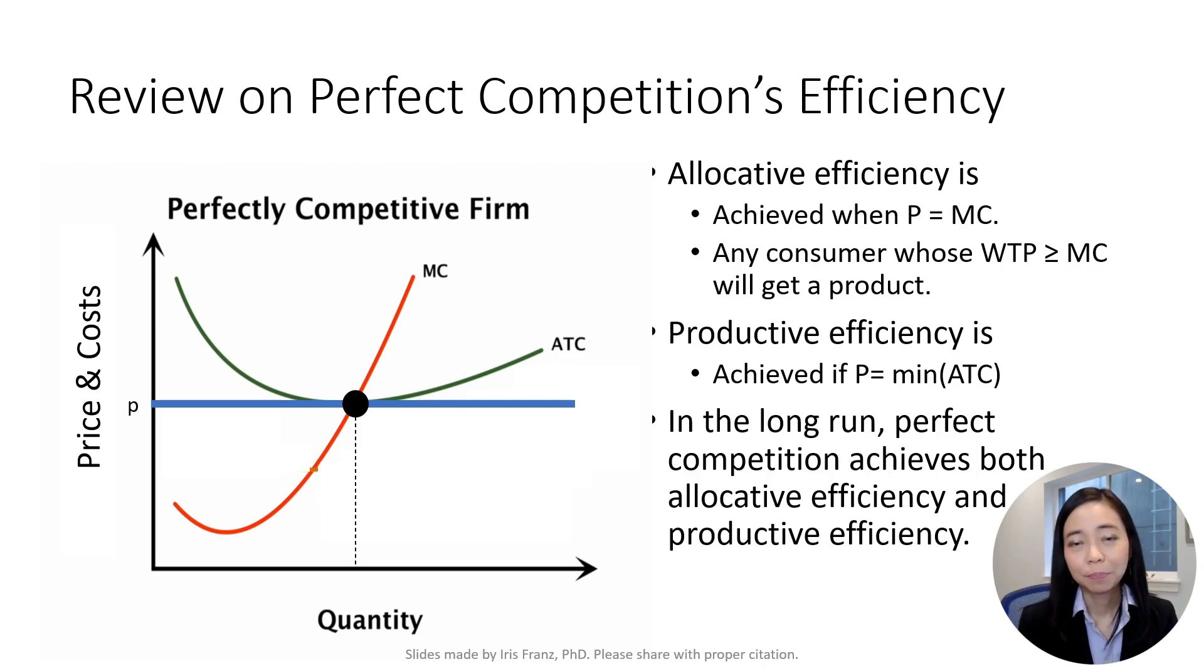In addition, because we are producing at the lowest point of ATC, we know that we cannot produce the product in an even cheaper way. Therefore, we have achieved productive efficiency. As a result, in the long run, perfect competition achieves both allocative efficiency and productive efficiency.